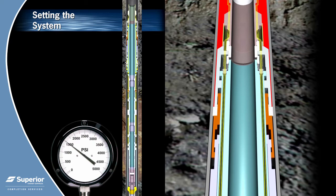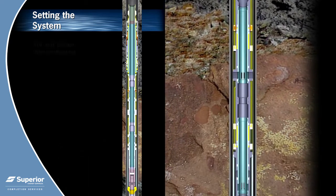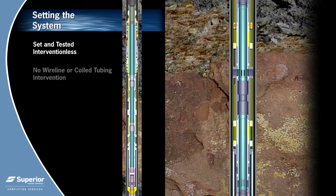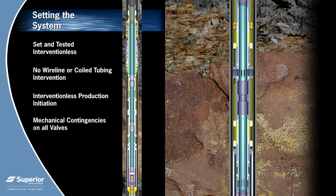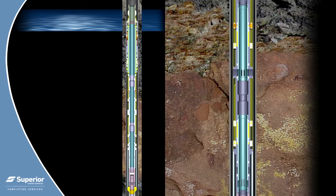The HAWC is an interventionless system because it is deployed, positioned, set, and tested without mobilizing coil tubing or slick line. The annular and radial flow valves are opened by applying pressure to the ID of the concentric isolation production string.